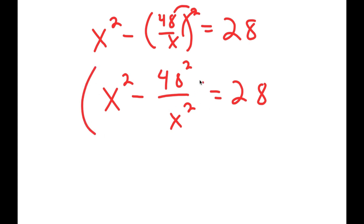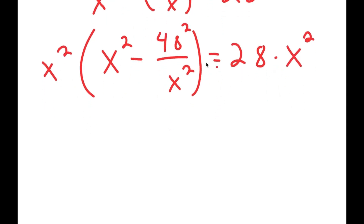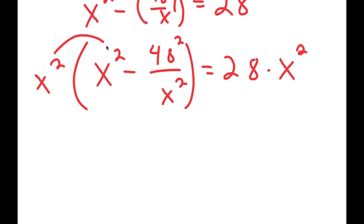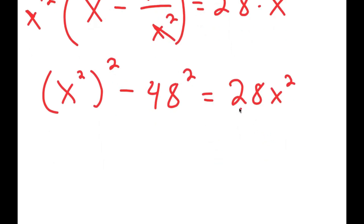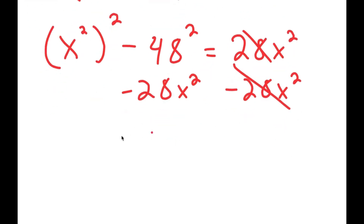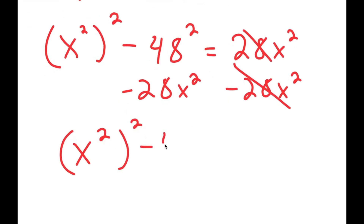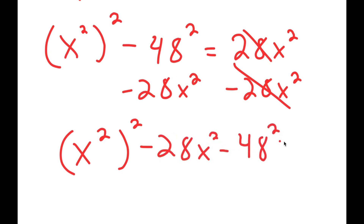Now I multiply both sides by x squared. On the left side, x squared times x squared gives x to the fourth, and the x squared terms in the fraction cancel, leaving 48 squared. On the right, I get 28 x squared. Subtracting 28 x squared from both sides gives x to the fourth minus 28 x squared minus 48 squared equals zero.